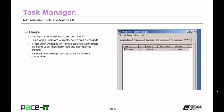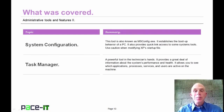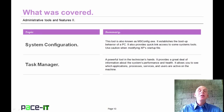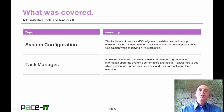The Users tab displays all users currently logged into a PC — there's usually only one, but Windows Workgroup allows up to 10 concurrent connections. You could also see more users if utilizing fast user switching or remote desktop. That concludes this session on Administrative Tools and Features Part 2. We talked about System Configuration and the Task Manager. On behalf of Pace IT, thank you for watching.